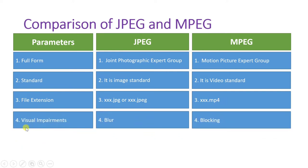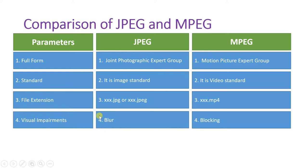Regarding visual impairments: in JPEG, artifacts appear as blurring. While in MPEG, which deals with video, the things which are not in motion are not encoded, so there will be blocking of those areas. In JPEG, if something is not dealt with to provide memory savings, it is simply blurred. So these are the visual impairments for each standard.